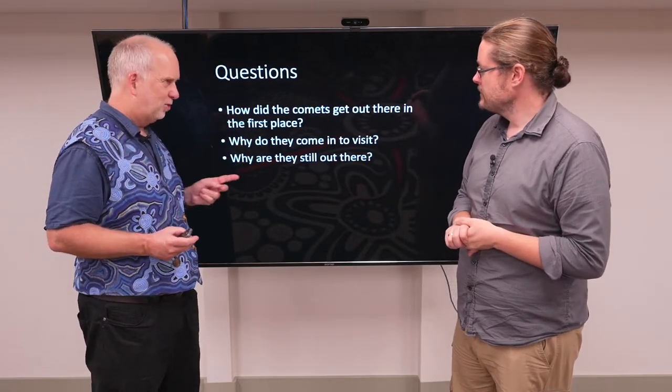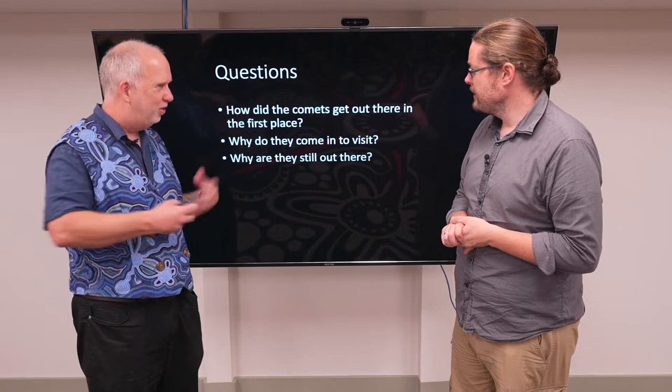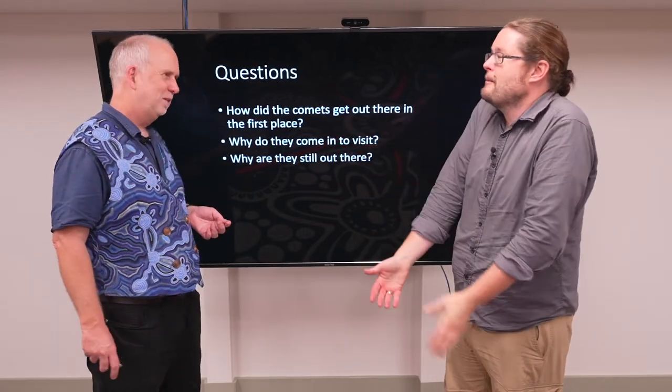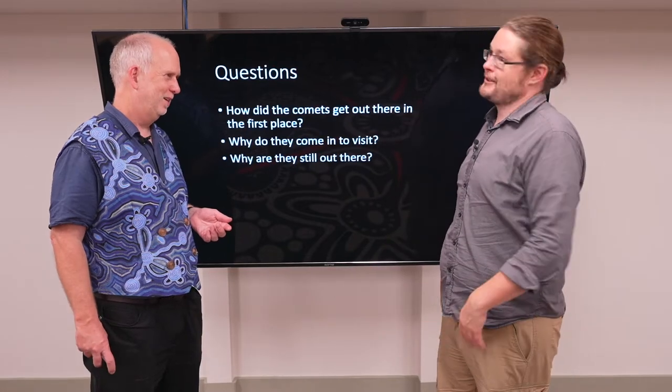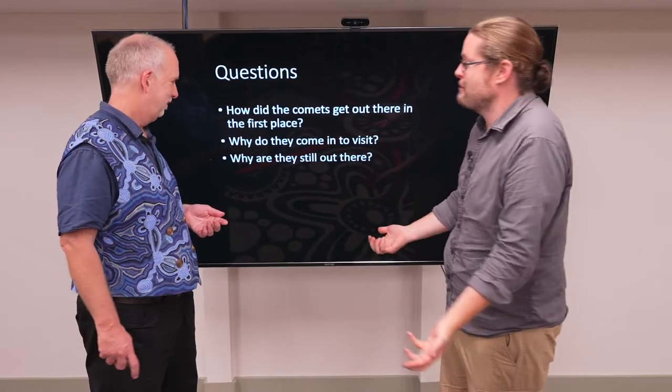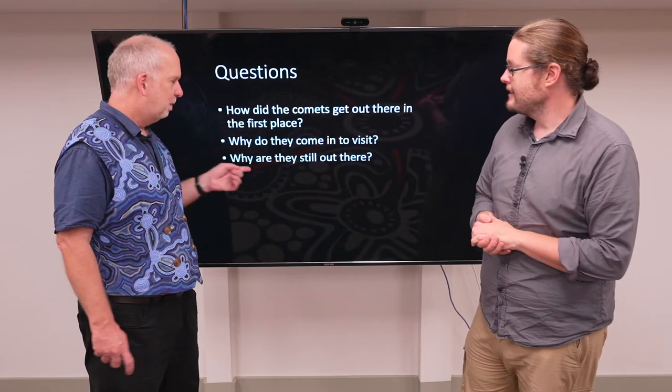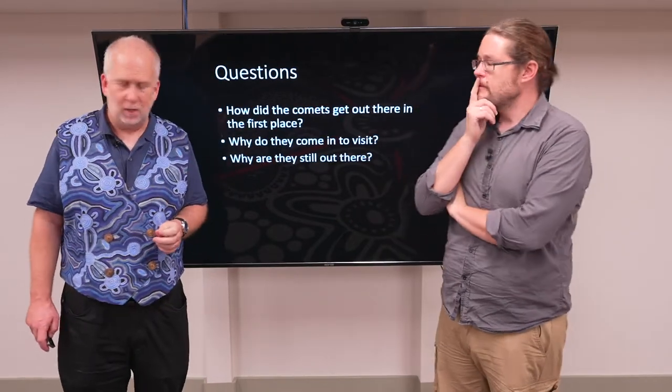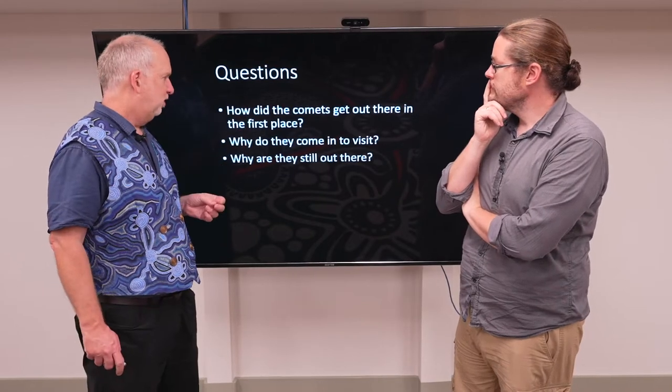The first question is, how did they get out there in the first place? Did they form out there? Were they formed further in and scattered out? Yeah, this is what I'm always wondering. So why do they come in? Why all of a sudden they're like, it's a good time to go and crash at Jupiter. Why? And also there's a puzzle about why they are still out there. So let's go through these.